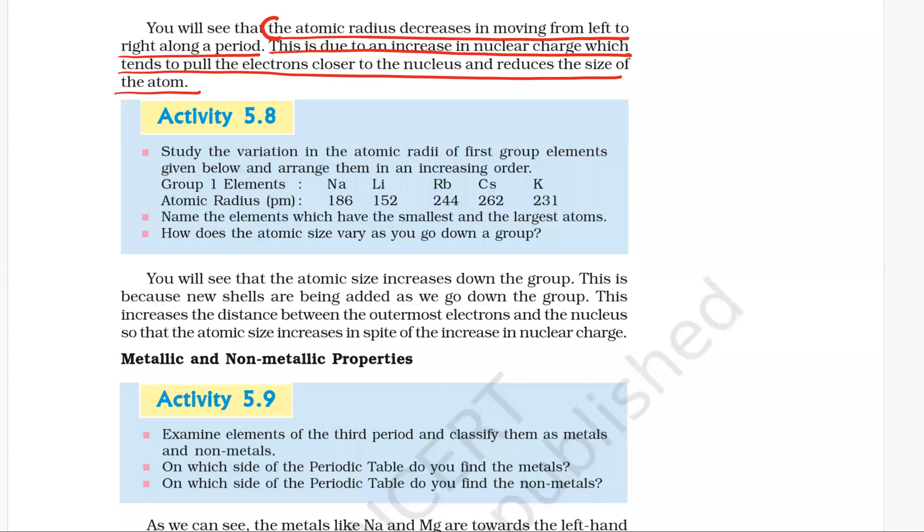Activity 5.8: Study the variation in the atomic radii of first group elements given below and arrange them in increasing order. So atomic radii of sodium, lithium, rubidium, cesium, and potassium is given. This is the first group, so arrange them in increasing order.